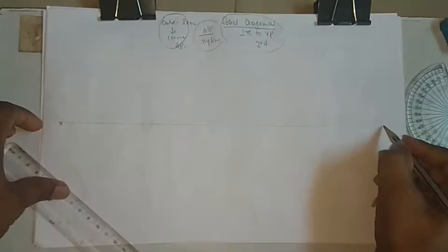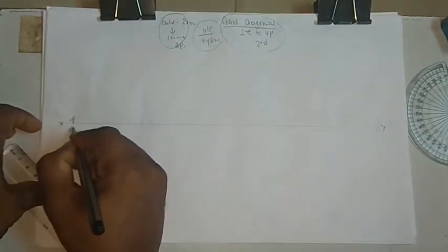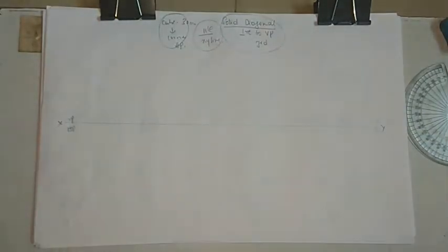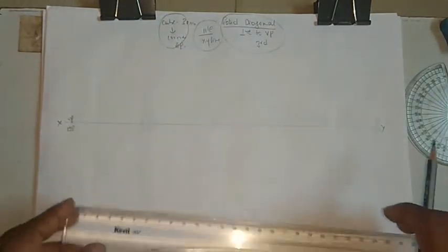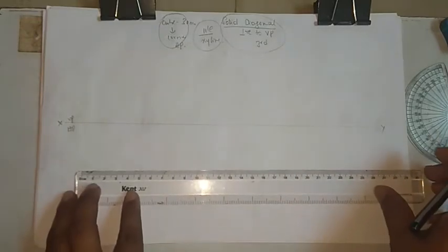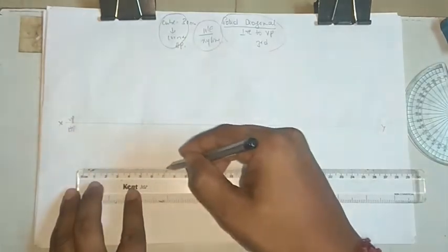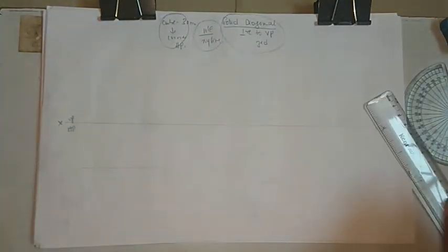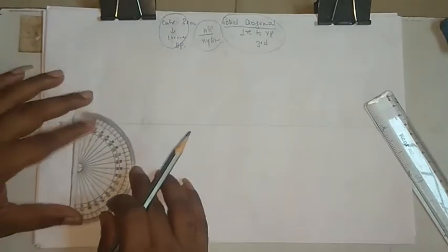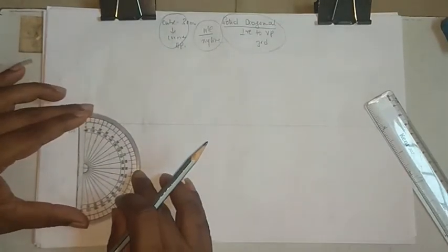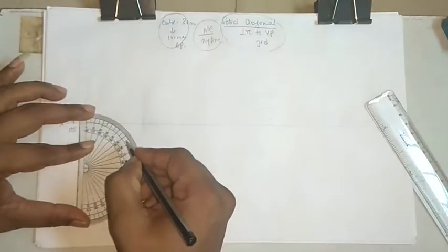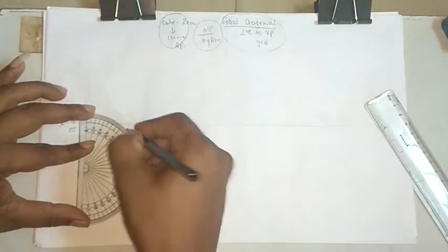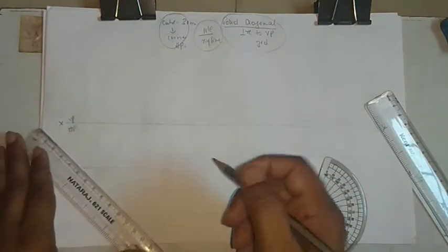Mark the XY line with VP and HP. Since the cube is resting on a corner, we start with just a vertical line. From the end of this vertical line, place the protractor and take 45 degrees on this side and 45 degrees on the other side.